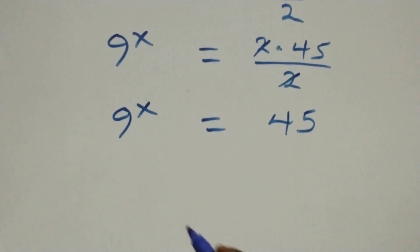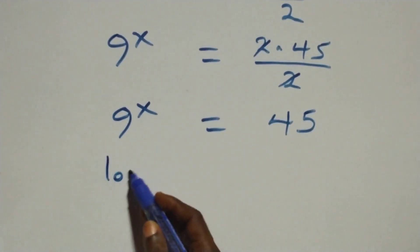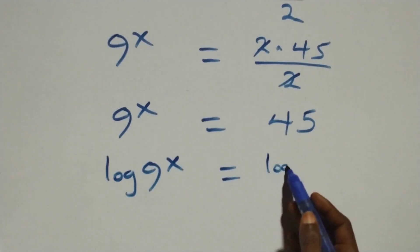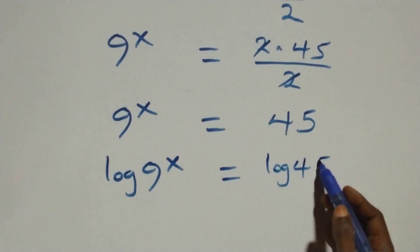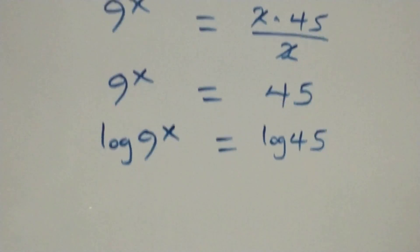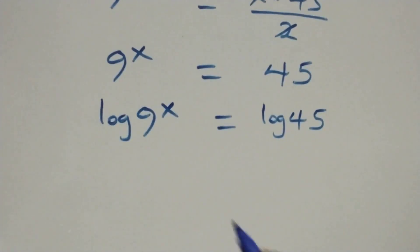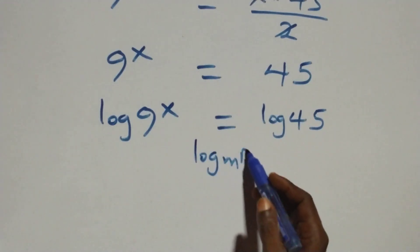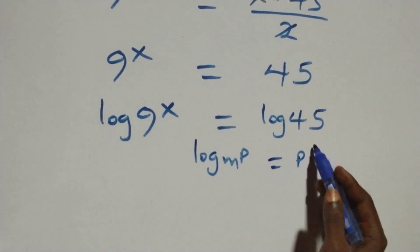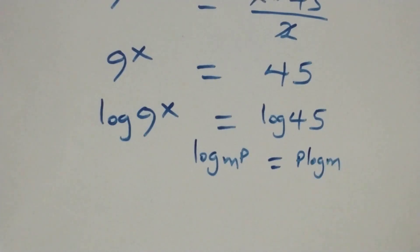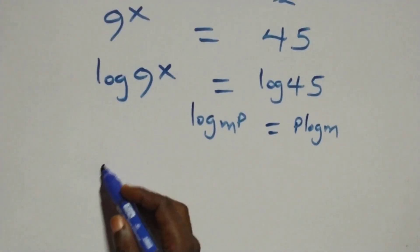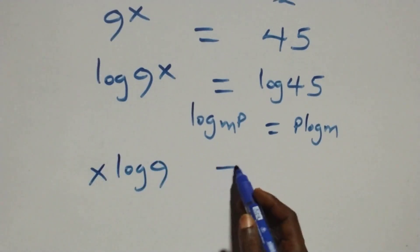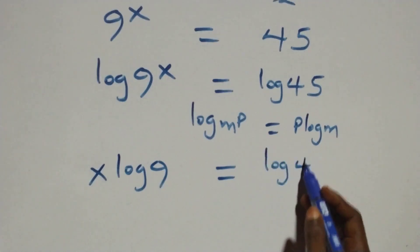Then here, we take the log on both sides and we have log 9 raised to power x equals to log 45. The next step, we apply the power log rule where we have log m raised to power p, this is the same thing as p log m. So all we have becomes x log 9 equals to log 45.